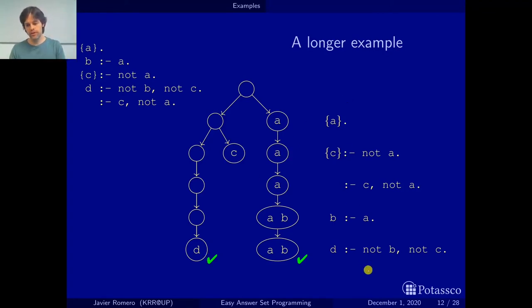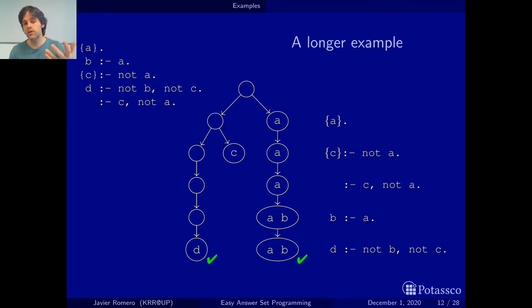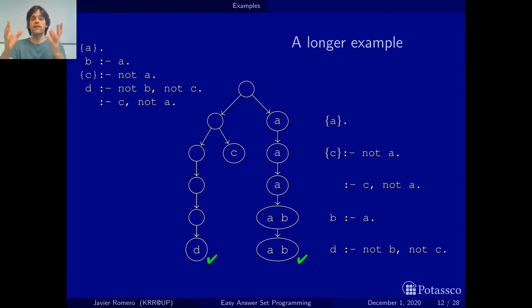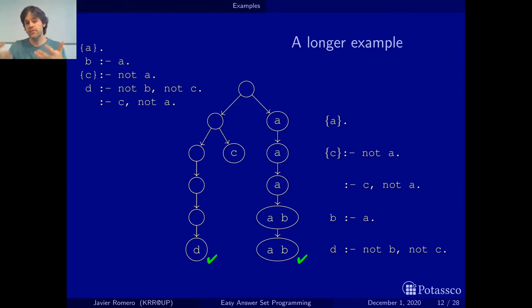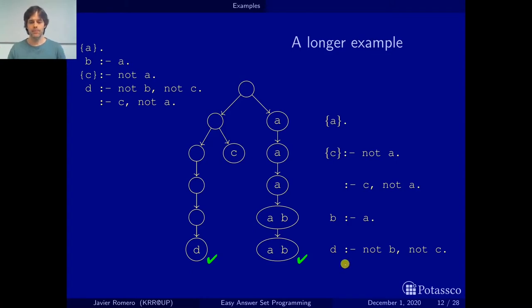If we run the rules of a program in order, the sets we obtain are the answer sets. It doesn't matter which valid order we choose, as long as we only apply a rule when all the rules with those atoms in the head have been applied before — or equivalently, there are no rules left with those atoms in the head still to apply.